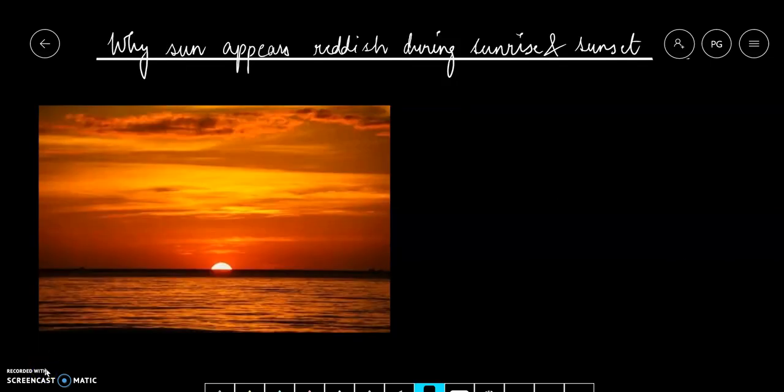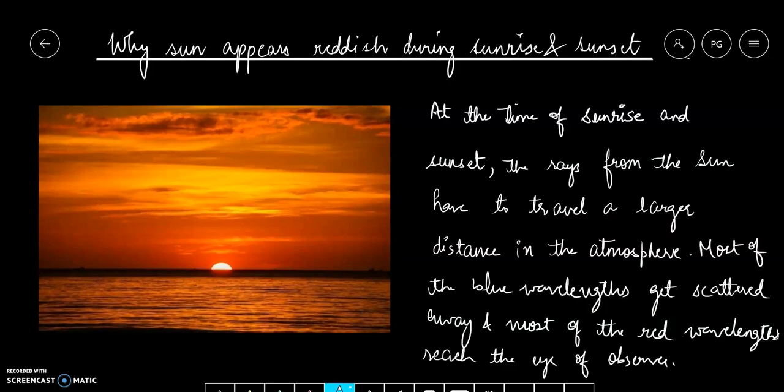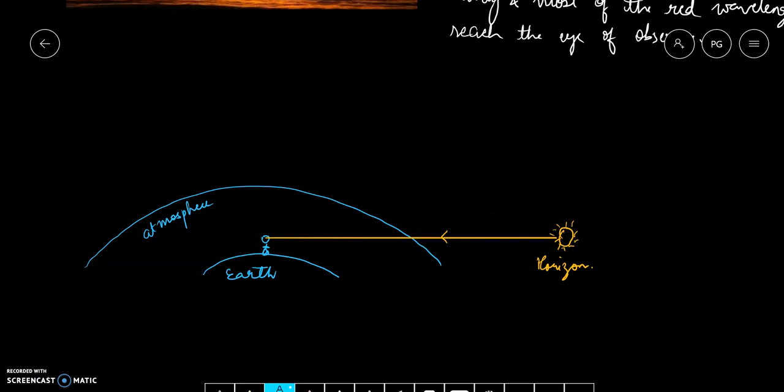Why does sun appear reddish during sunrise and sunset? This is because at the time of sunrise and sunset, the rays from the sun have to travel a large distance in the atmosphere. Most of the blue wavelengths get scattered away and most of the red wavelengths reach the eye of the observer. When sun is at the horizon, then these rays have to travel a really large distance through the atmosphere such that most of the blue light gets scattered away in its path. Maximum blue light gets scattered, leaving the redder wavelengths.